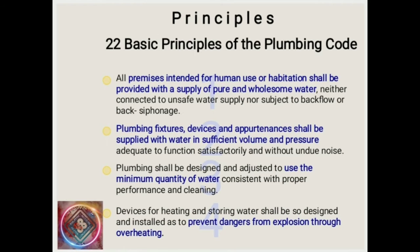The 22 basic principles of the plumbing code. First: All premises intended for human use or habitation shall be provided with a supply of pure and wholesome water, neither connected to unsafe water supply nor subject to backflow or back-siphonage. Second: Plumbing fixtures, devices, and appurtenances shall be supplied with water in sufficient volume and pressure adequate to function satisfactorily and without undue noise. Third: Plumbing shall be designed and adjusted to use the minimum quantity of water consistent with proper performance and cleaning.